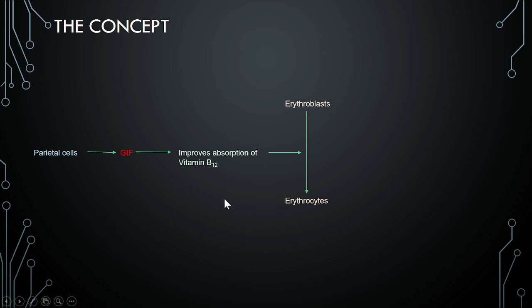That helps in absorption of vitamin B12. Generally, vitamin B12 is not freely absorbed into the bloodstream. You are taking it from the food but it is not getting absorbed. However, when GIF is present, the vitamin B12 gets absorbed into your blood. Then it's made available for this process. This process is called erythropoiesis process.